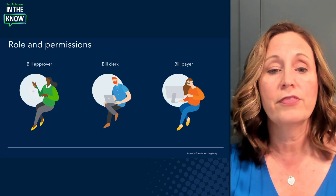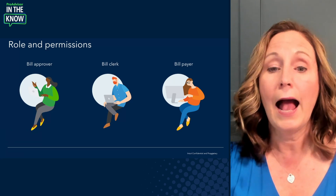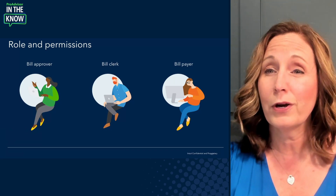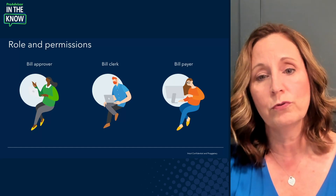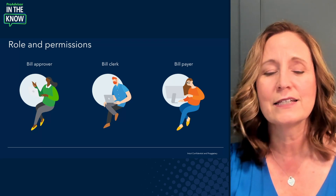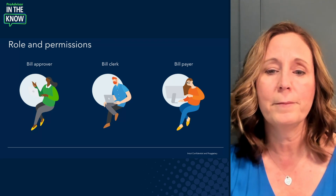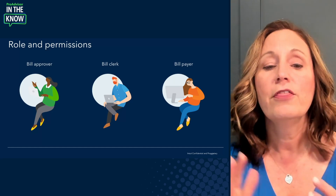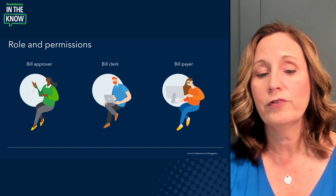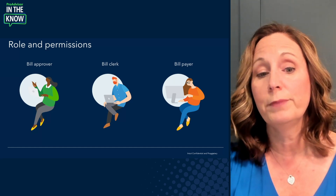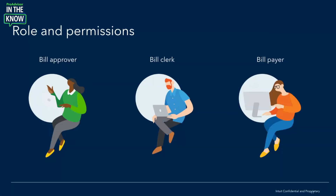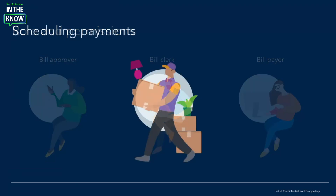We also have the bill clerk. They can add, edit, and view vendors, add bills, and mark them paid — for cases when bills are paid outside of Bill Pay, like a handwritten emergency check — but they can't approve or pay bills through QuickBooks Bill Pay. Then there's the bill payer: they can view and pay bills and edit vendor information, but can't take other bill-related actions. All of these roles are available to clients on QBO Advanced.